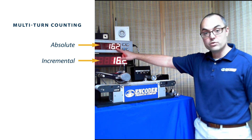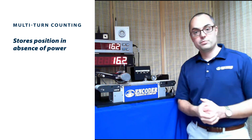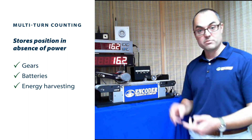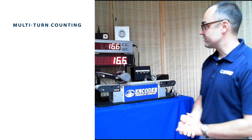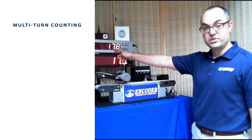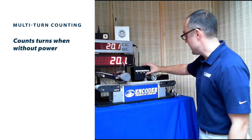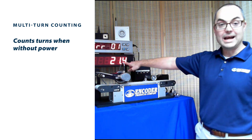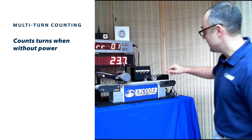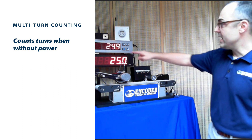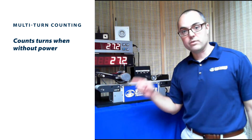That's great, but that just means it stored the position — and all three methods can do that, whether using gears, batteries, or energy harvesting. Here's why we really care: while the encoder is moving and our position is changing, imagine a power loss at the factory. I turn off the absolute power while the encoder is still moving. When I turn it back on, we have not lost our position — meaning this encoder was still counting turns even while it was not powered.